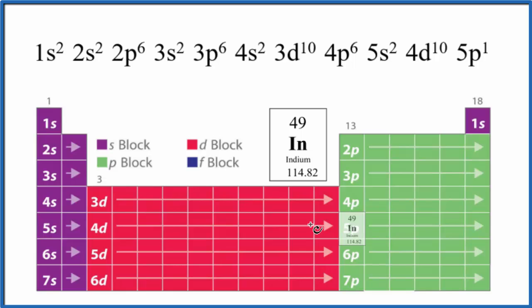And we've used a total of 48 electrons. We only need one more. So we're going to put that right here in the 5p1. That's the last term. There's our indium. So this is the electron configuration for indium.